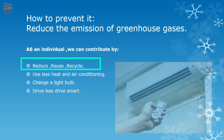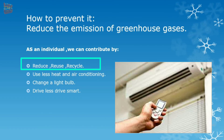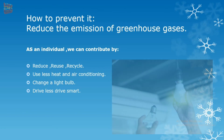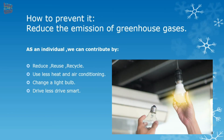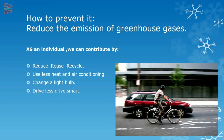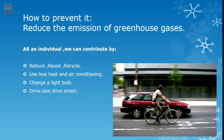Next is to use less heat and air conditioning — we should use ACs as little as possible. Next, change a light bulb — we should replace regular light bulbs with LED bulbs. Next, drive less and drive smart — we should use a bicycle or just walk wherever possible instead of taking our cars everywhere. These small steps contribute a lot. As we know, boond boond se hi saagar banta hai. Thank you so much for watching the video.